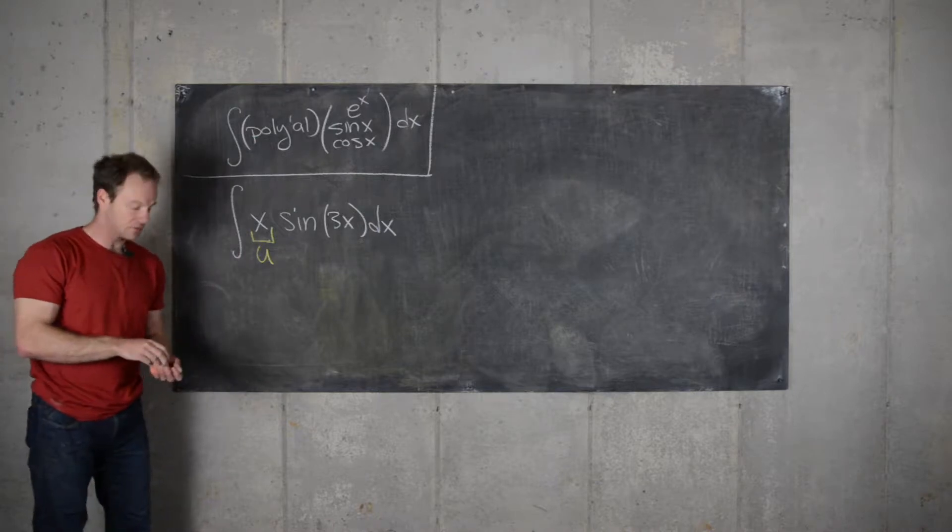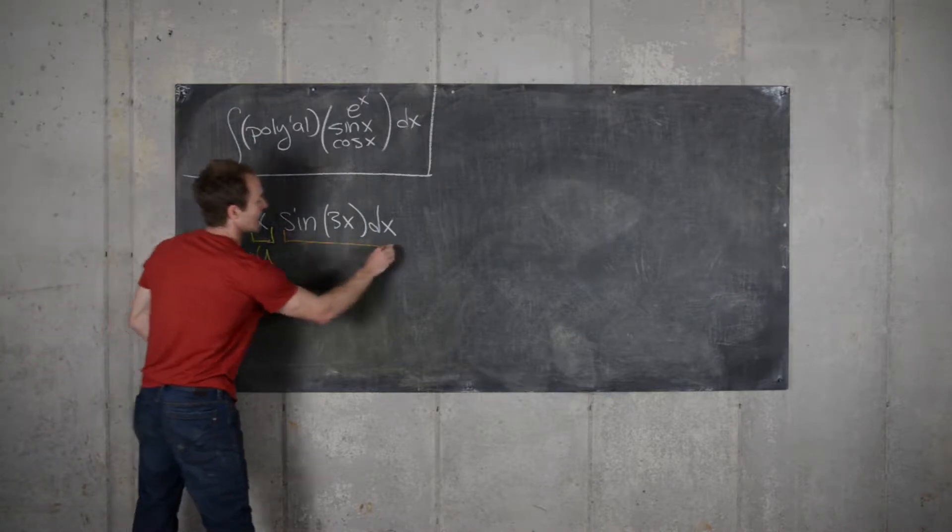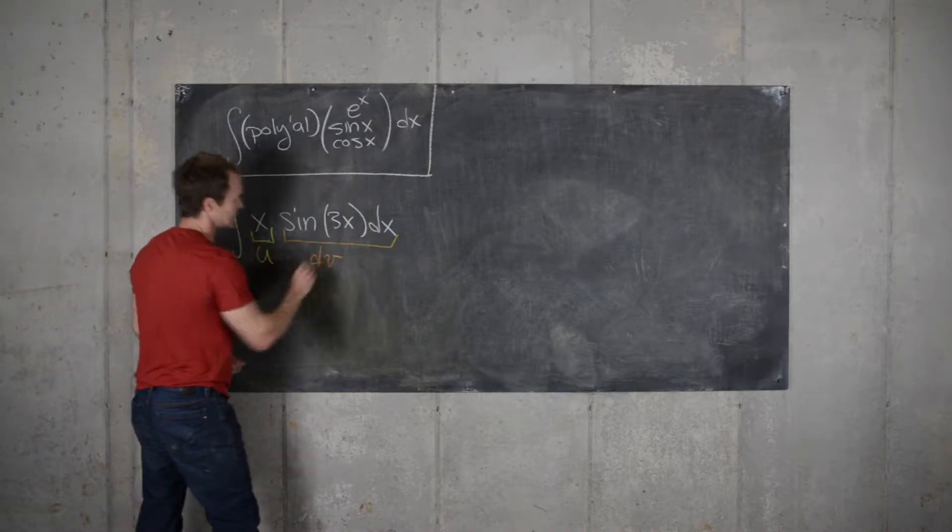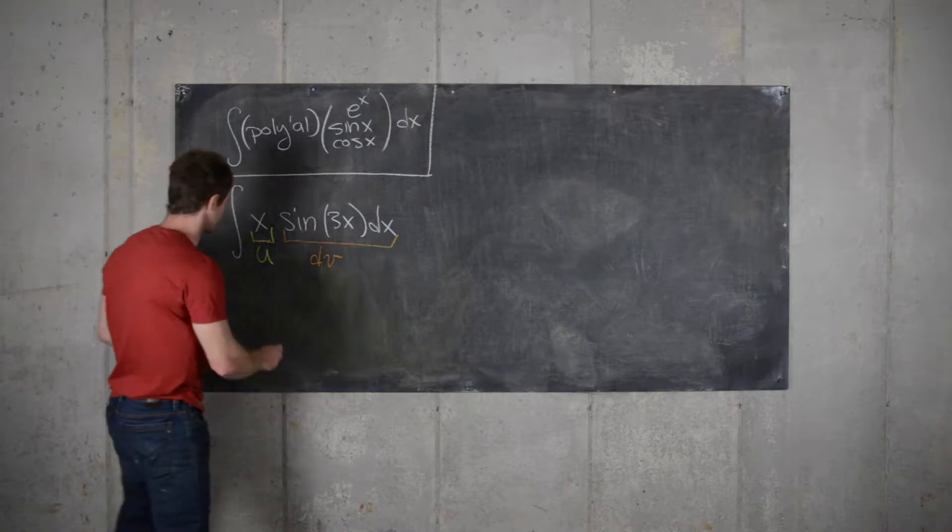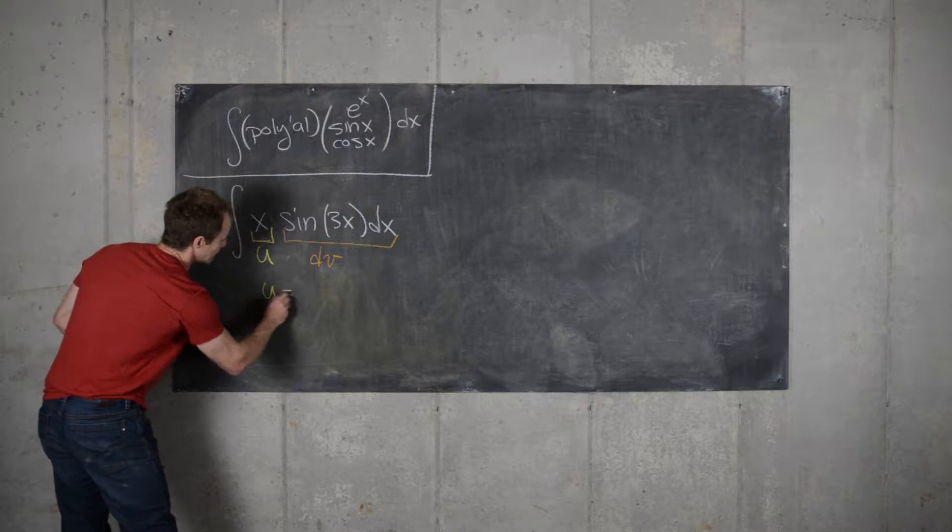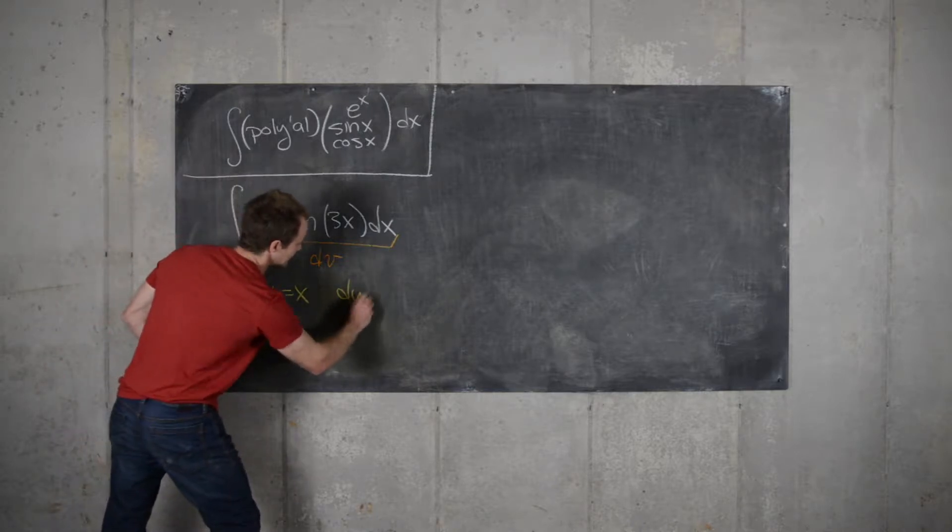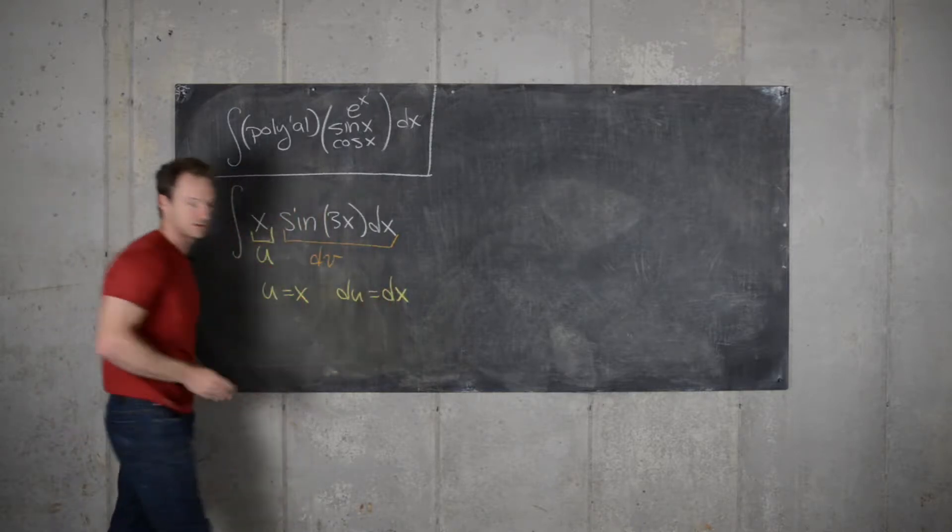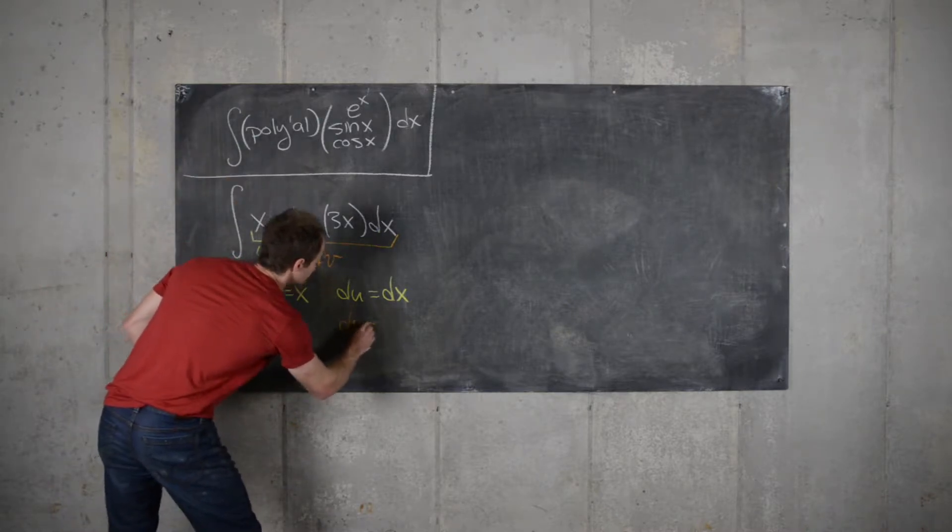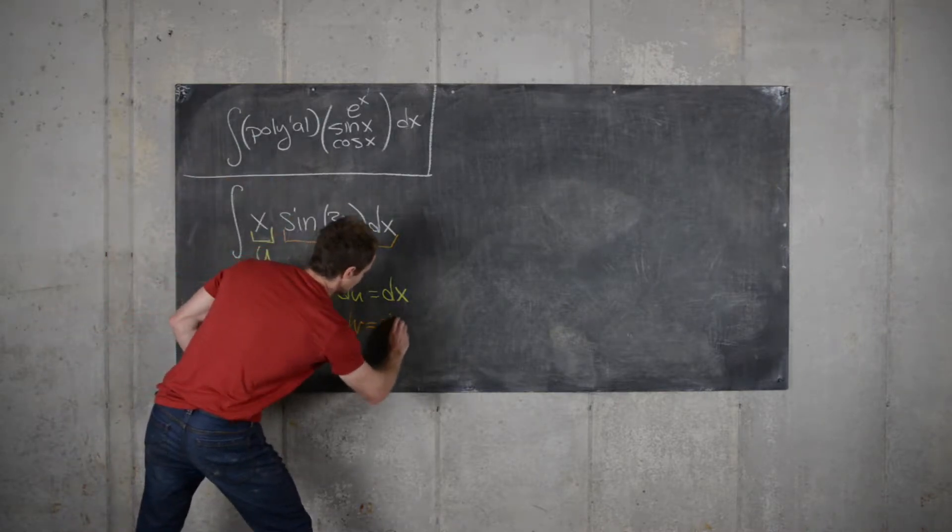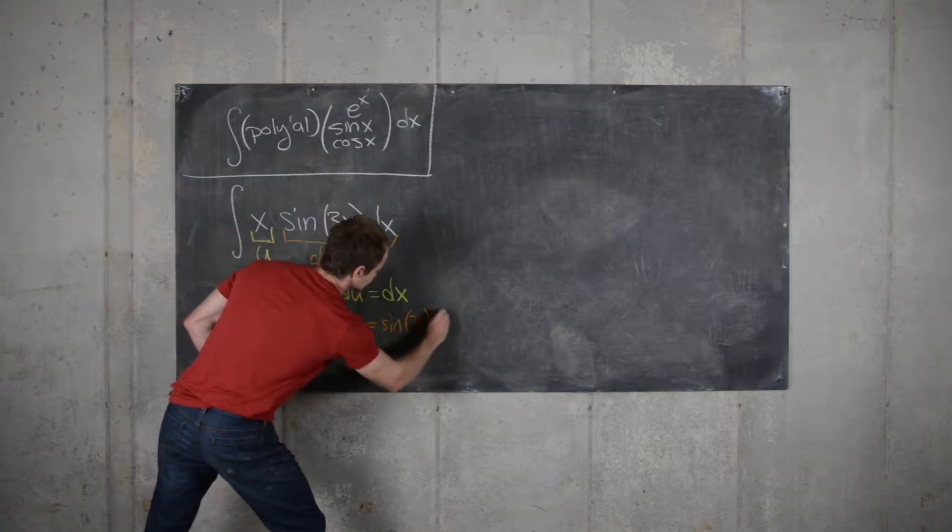So when we set up our integration by parts, we'll let x be u and then we'll let sine of 3x dx be dv. So let's see what that does to our integral. So if u equals x, that means du is just dx.